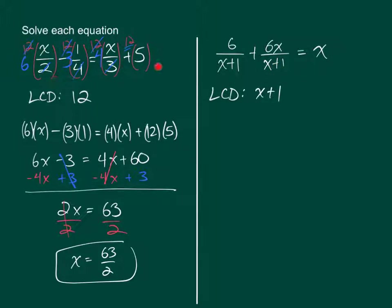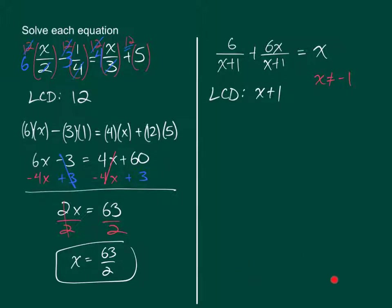The previous example over here is not a rational equation — it is a linear equation, because there are no variables in the denominator, just X to the first power. When we introduce variables into the denominator of an equation, we end up having restricted values. We say X cannot equal negative 1 — this is our restricted value — because when you substitute negative 1 in for X you get a divide-by-zero situation. That can't happen. So we have to pay special attention to our final answer: if it equals negative 1, that is a restricted value and that answer will not work.